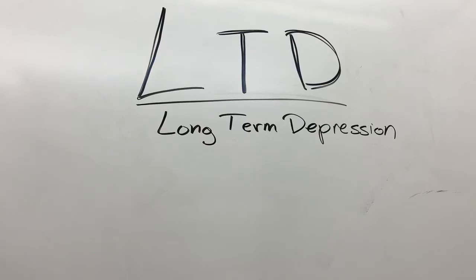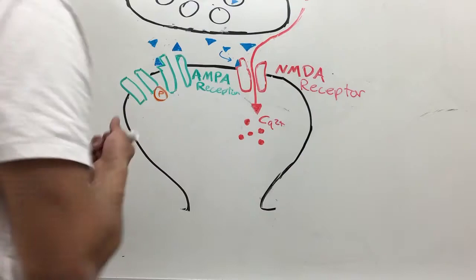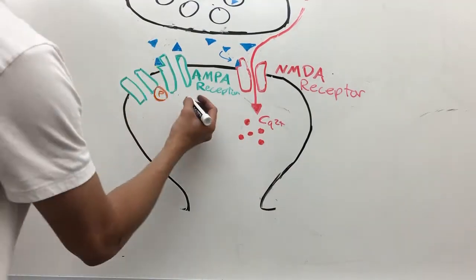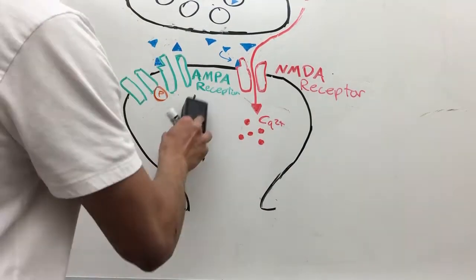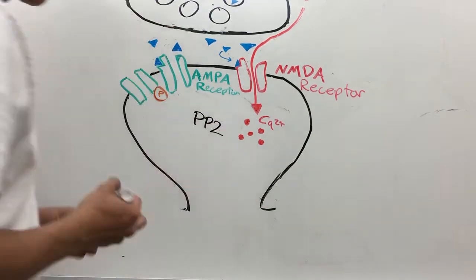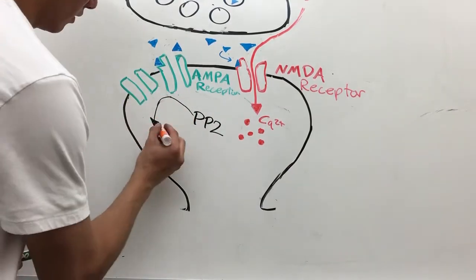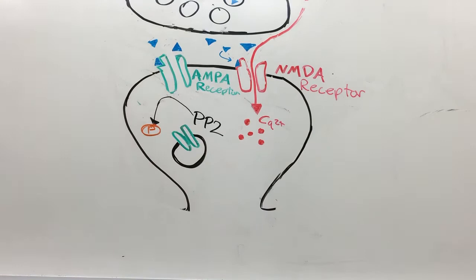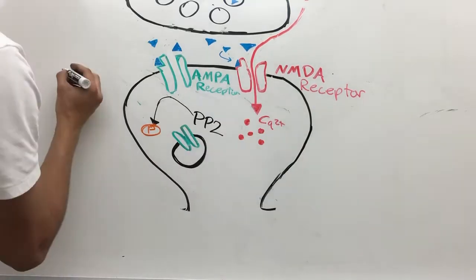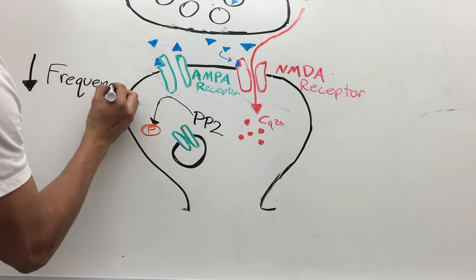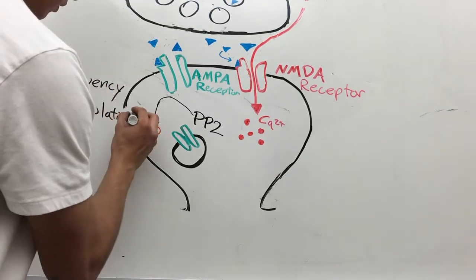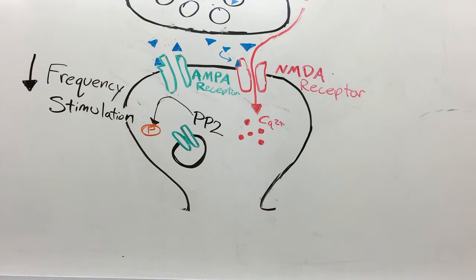Now we're going to be looking at long-term depression, and long-term depression is how we weaken the synapse, more specifically the synapses at the CA3 to CA1 synapse. Inside the postsynaptic neuron we have PP2, which will come and take off the phosphorus. That will weaken the opening of the AMPA receptor and bring them in. So now there will be fewer AMPA receptors in the postsynaptic neuron, and that is usually due to lower frequent activations.